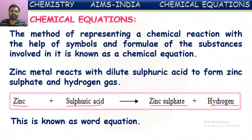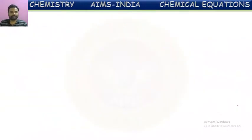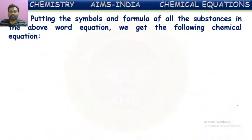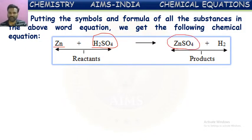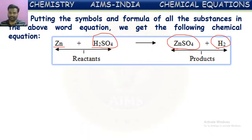In place of words, if we use symbols and formulae, then that is called a chemical equation. Putting the symbols and formulae of all the substances in the word equation, we get the chemical equation: in place of zinc we use the symbol Zn, in place of sulfuric acid we use H2SO4, zinc sulfate is replaced with ZnSO4, and hydrogen gas is replaced with H2. This is called the chemical equation.